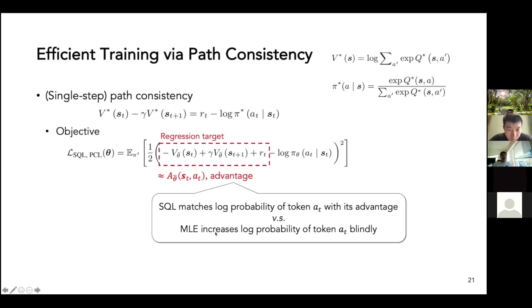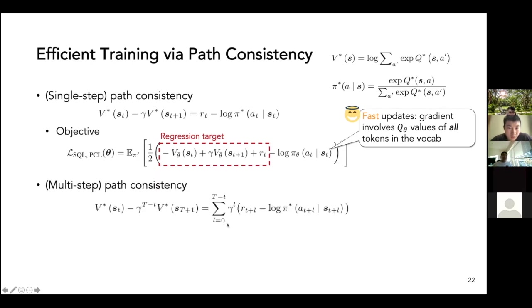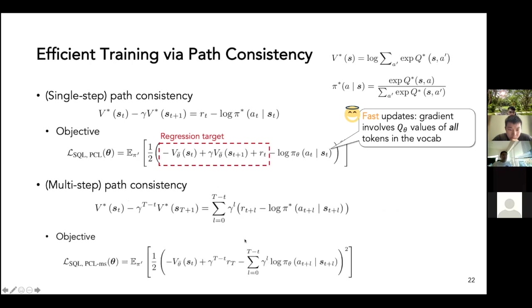This is different from maximum likelihood training, where the algorithm always tries to increase the log probability of token A_T if it is observed in the data. This objective has nice properties — updates will be much faster than hard Q-learning because the gradient involves the Q-values of all tokens in the vocabulary via the softmax function. Path consistency further has a multi-step version, obtained by aggregating the left-hand side and right-hand side across time steps, from which we derive a second objective.